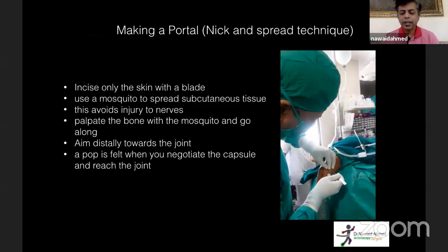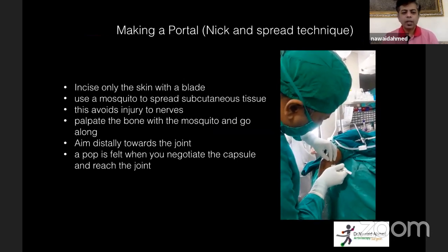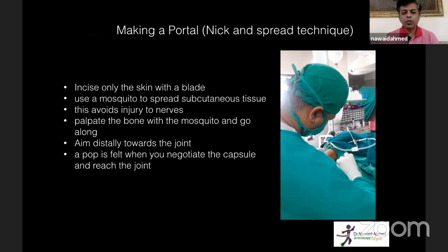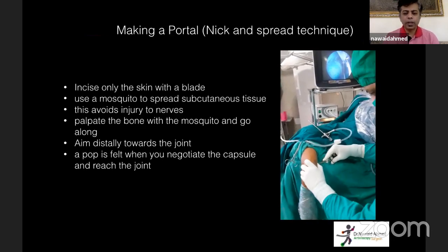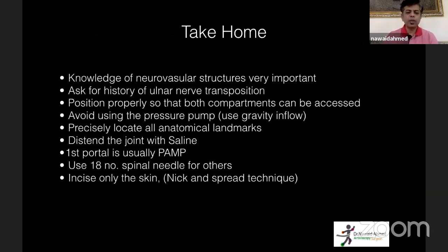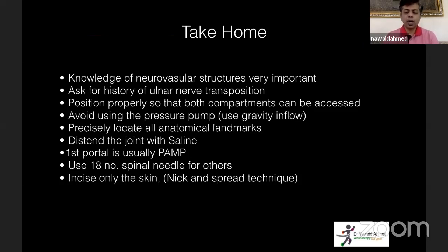For making portals in elbow arthroscopy, use the nick-and-spread technique: use the blade to incise only the skin, don't go deep, then use a mosquito to spread the subcutaneous tissue — this avoids injury to subcutaneous and deep nerves. Palpate the bone with your mosquito and aim distally toward the joint. A pop is felt when you negotiate the capsule. Take-home: knowledge of neurovascular structures is vital. Always ask about ulnar nerve transposition history, position the patient properly, mark landmarks, insufflate the joint, and use the proximal anteromedial portal first.